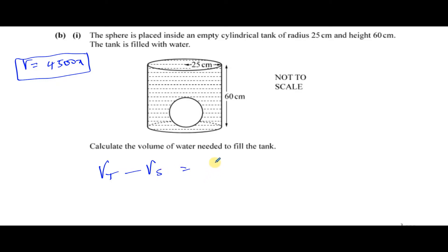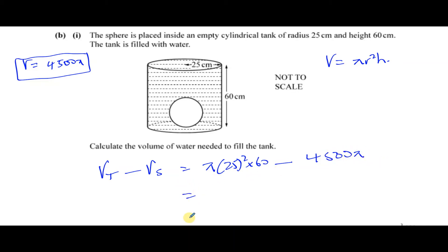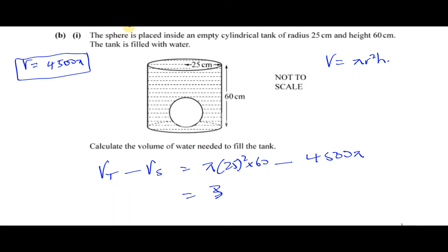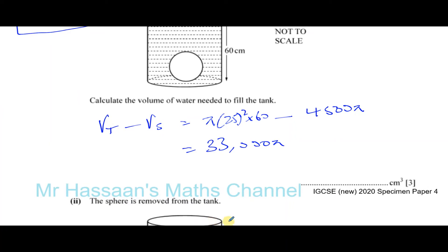The volume of the tank — it's a cylinder, so the volume is the cross-sectional area times the height: πr²h. That gives us π × 25² × 60, minus our answer from before which is 4500π. Using exact forms makes answers more accurate. So π × 25² × 60 − 4500π gives us 33,000π.